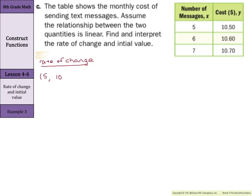Our next point is 6 messages for x, and $10.60 for our y. Now remember, slope can be calculated or rate of change, same thing, as y2 minus y1 over x2 minus x1.